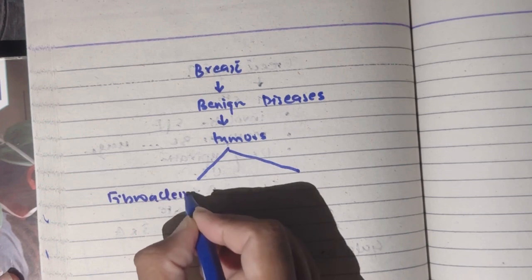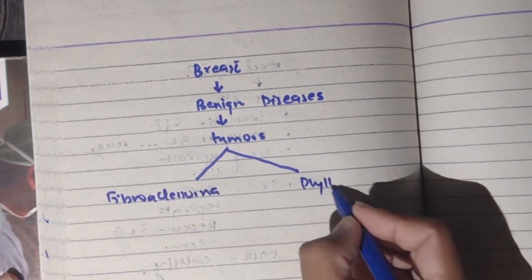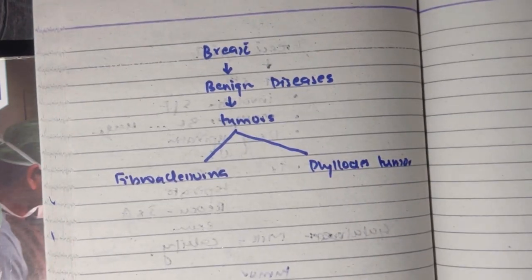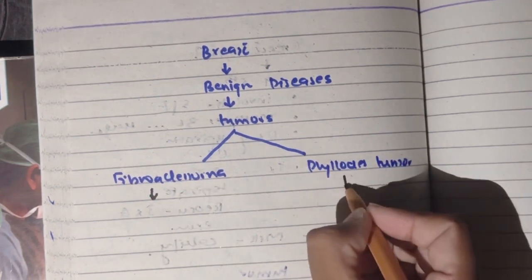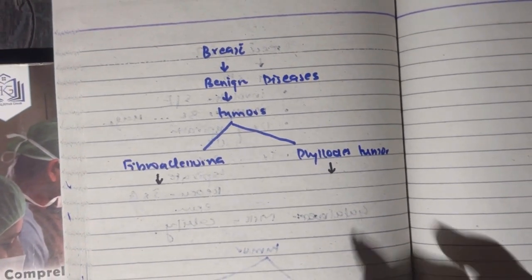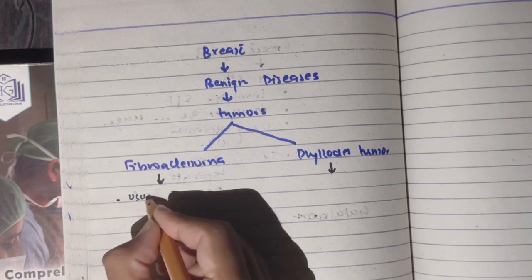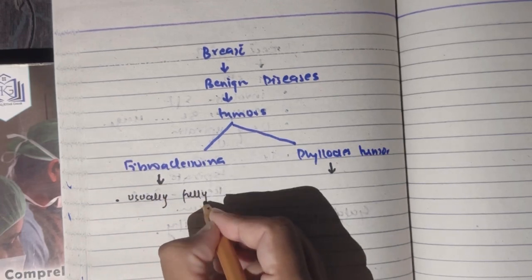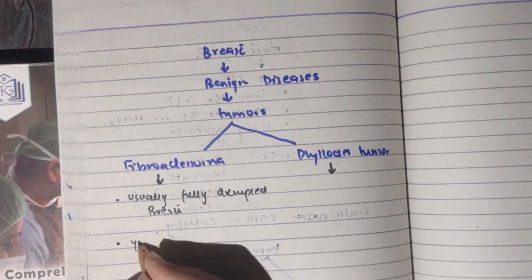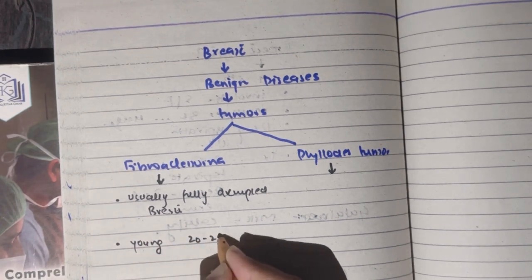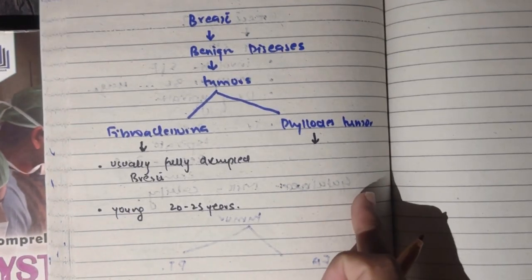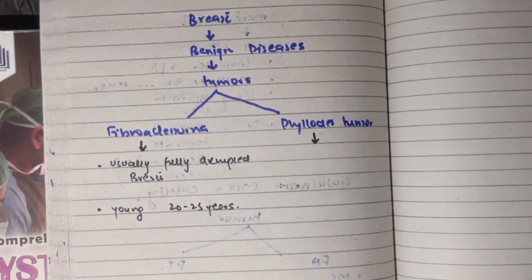Benign tumor number one is fibroadenoma and number two is phylloid tumor. Now we have these two pictures, I don't know why but YouTube has a limit. I will try to solve this. Fibroadenoma occurs in fully developed breast, mostly in young females, 22-25 years of age. Most women can also be older but young.